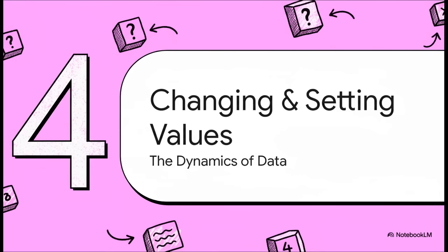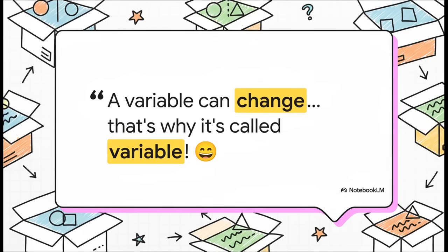Next up, changing and setting values. This is where the data gets dynamic. It's kind of obvious when you think about it, right? It's called a variable because it can vary. The stuff you put in the box isn't set in stone. You can change it. You can update it. You can replace it completely. And that is what makes our programs feel alive and interactive.